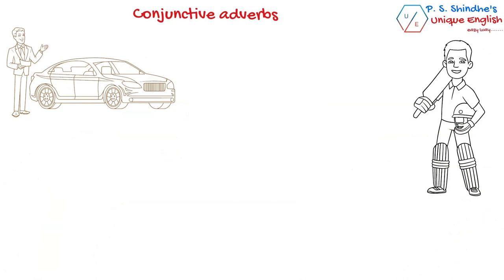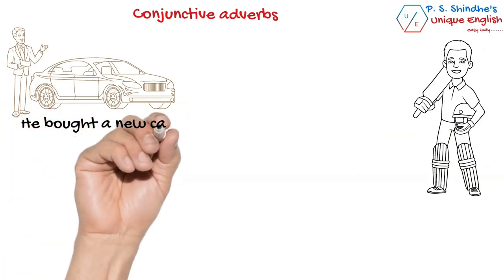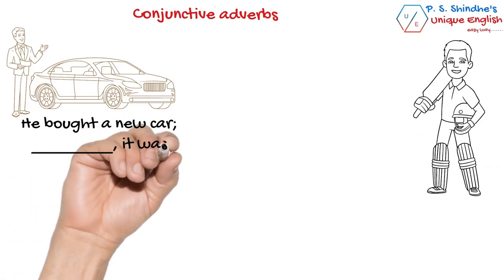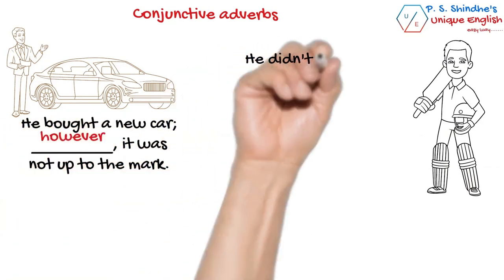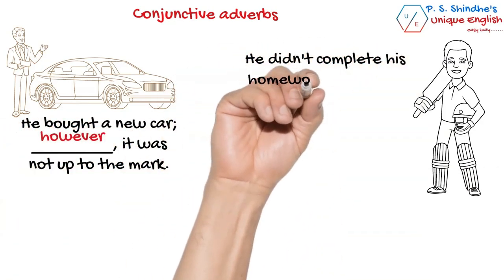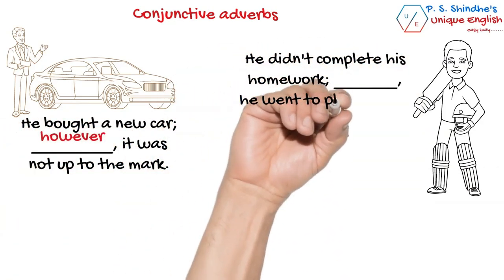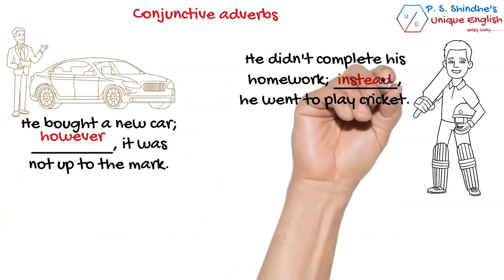Examples of conjunctive adverbs: 'He bought a new car. However, it was not up to the mark.' And: 'He didn't complete his homework. Instead, he went to play cricket.'